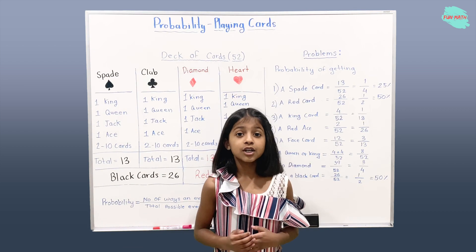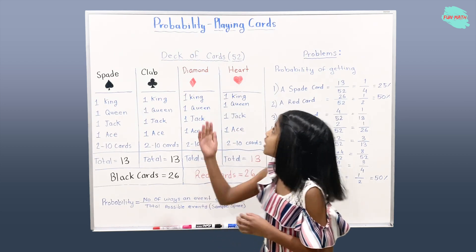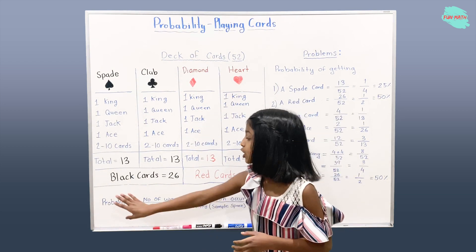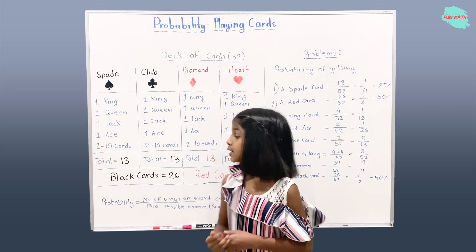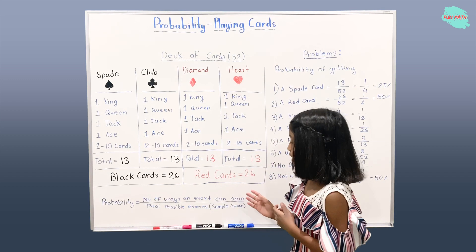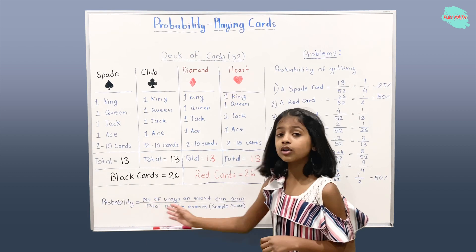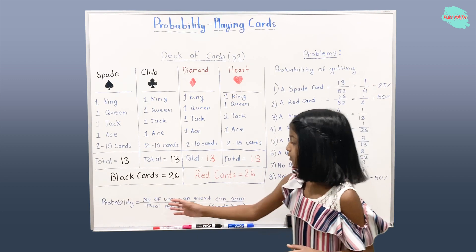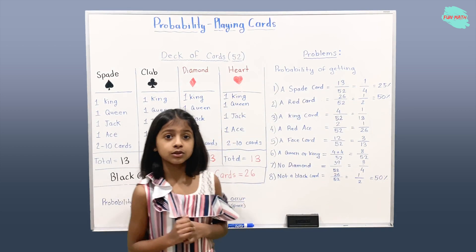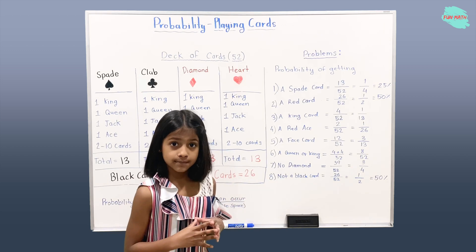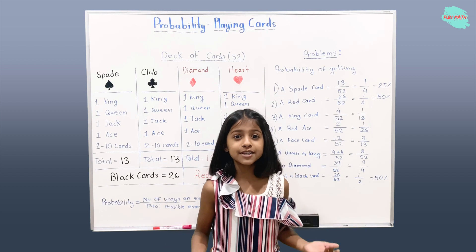Let's review what we learned today. We learned about probability of playing cards — first about the deck of cards, then the formula for probability: number of ways an event can occur over total possible events, which can also be called sample space. We also solved a few interesting problems. I hope you learned something from this video. Thanks for watching. Bye!